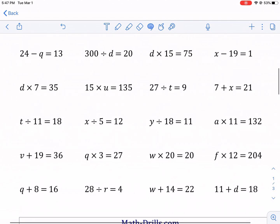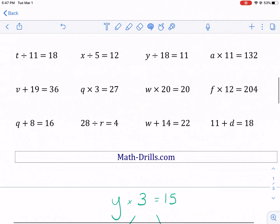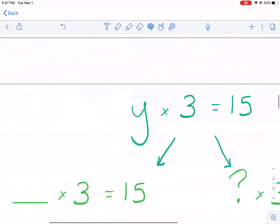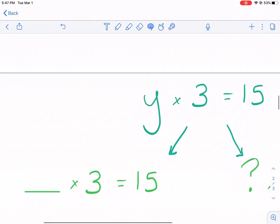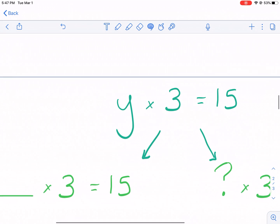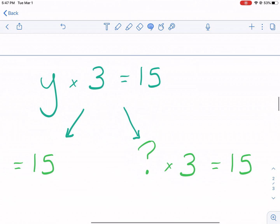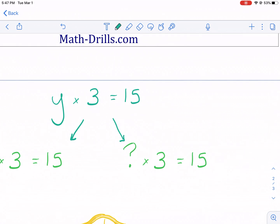Now before we get into this, if this is the first time you're seeing letters in equations, don't be afraid. I'm going to give a little bit of background information. If you want to skip ahead, that's fine. But essentially every time we see a letter, that just represents an unknown amount. So you could think of it as a blank. So y times 3 equals 15, that could be the same as blank times 3 equals 15 or question mark times 3 equals 15. So we know it's 5, so we'd write the answer as y equals 5. So that missing value, which we called y, the variable as we call them, is 5.